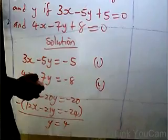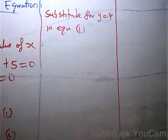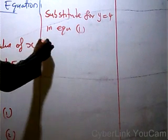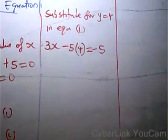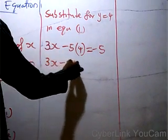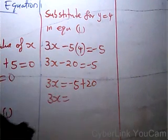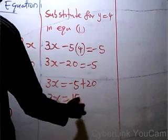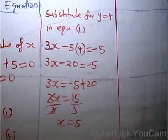If y equals 4, we substitute for y in equation 1. Equation 1 says 3x minus 5 times 4 equals minus 5. Opening the bracket: 3x minus 20 equals minus 5. Collecting terms: 3x equals minus 5 plus 20, so 3x equals 15. Dividing both sides by 3, x equals 5. So we have established that y equals 4 and x equals 5.